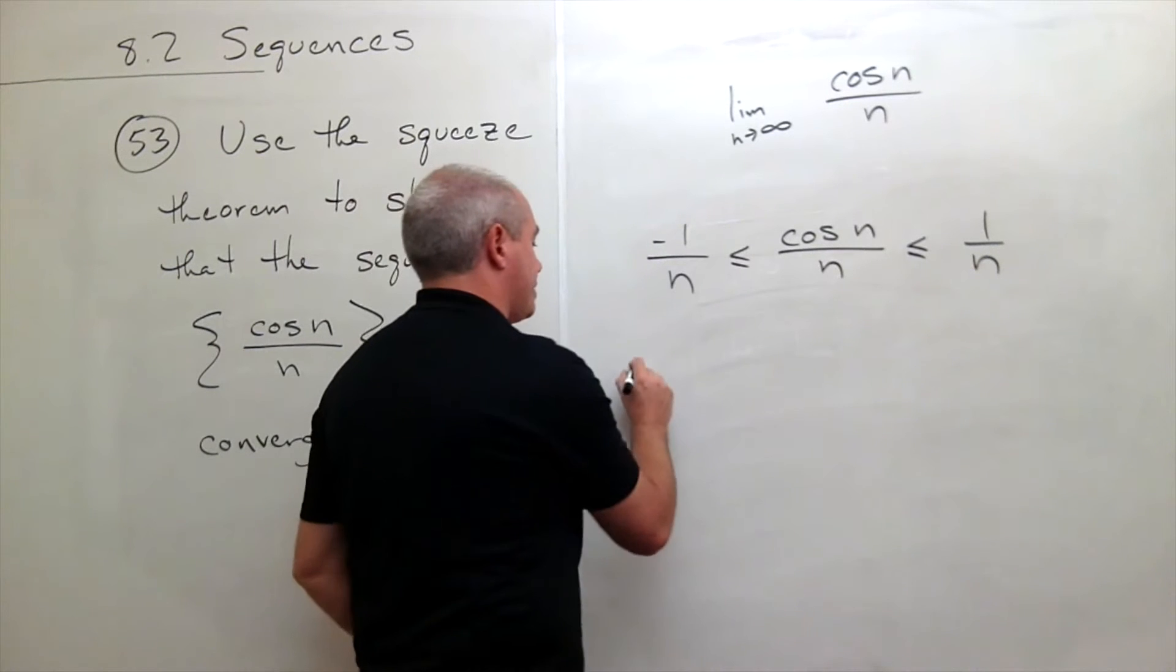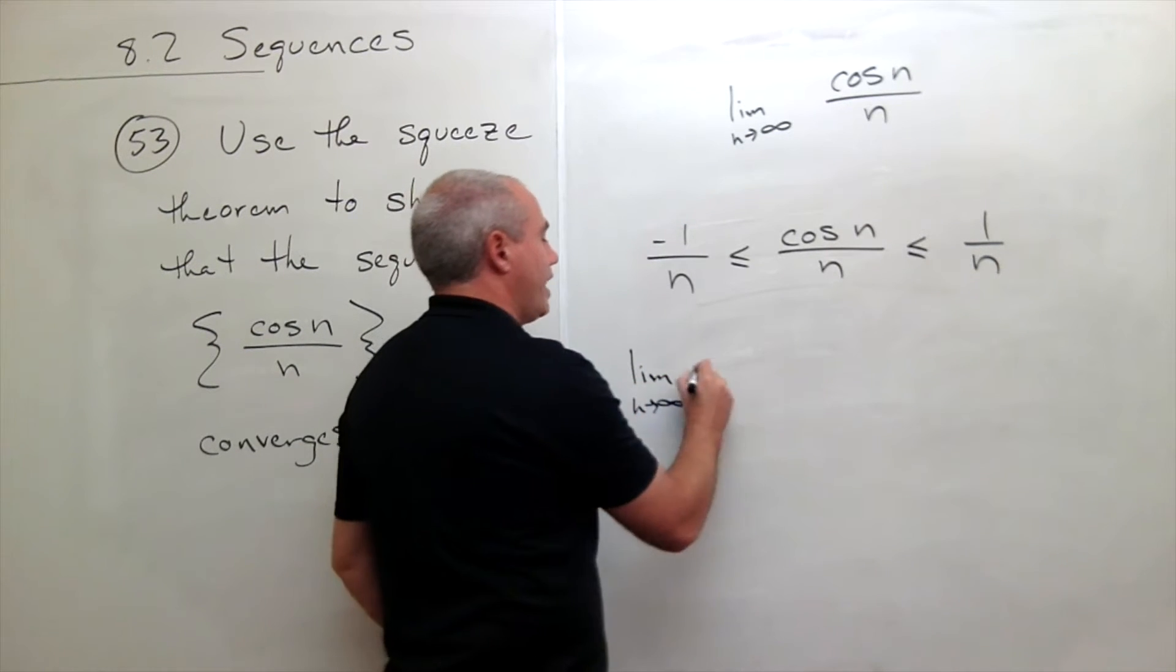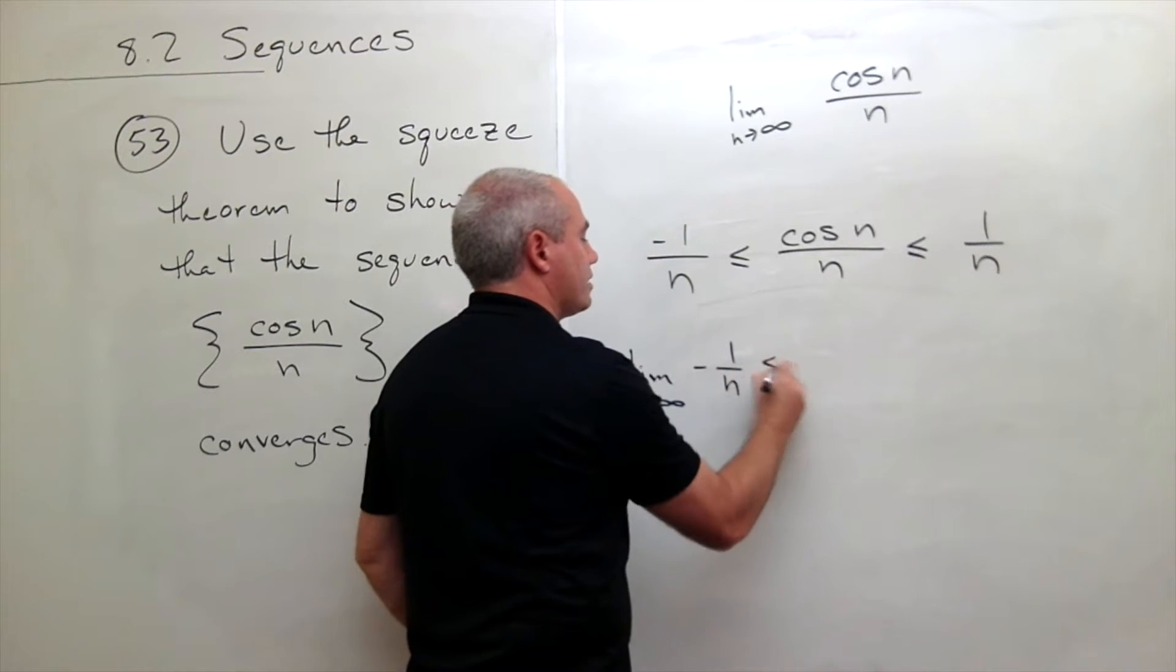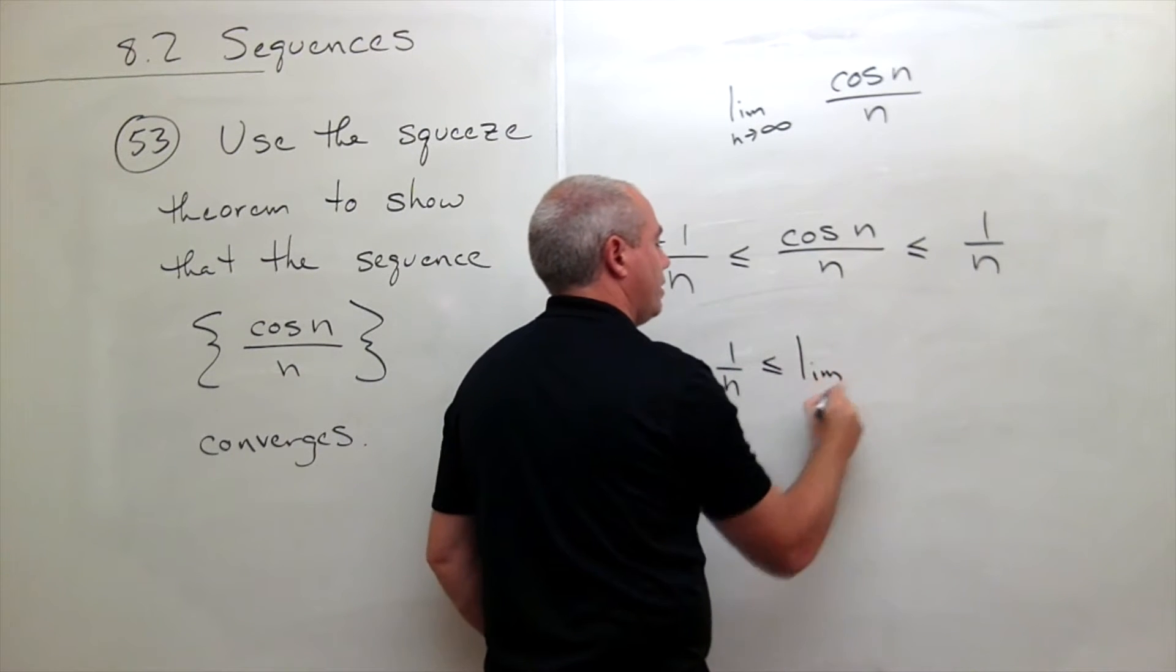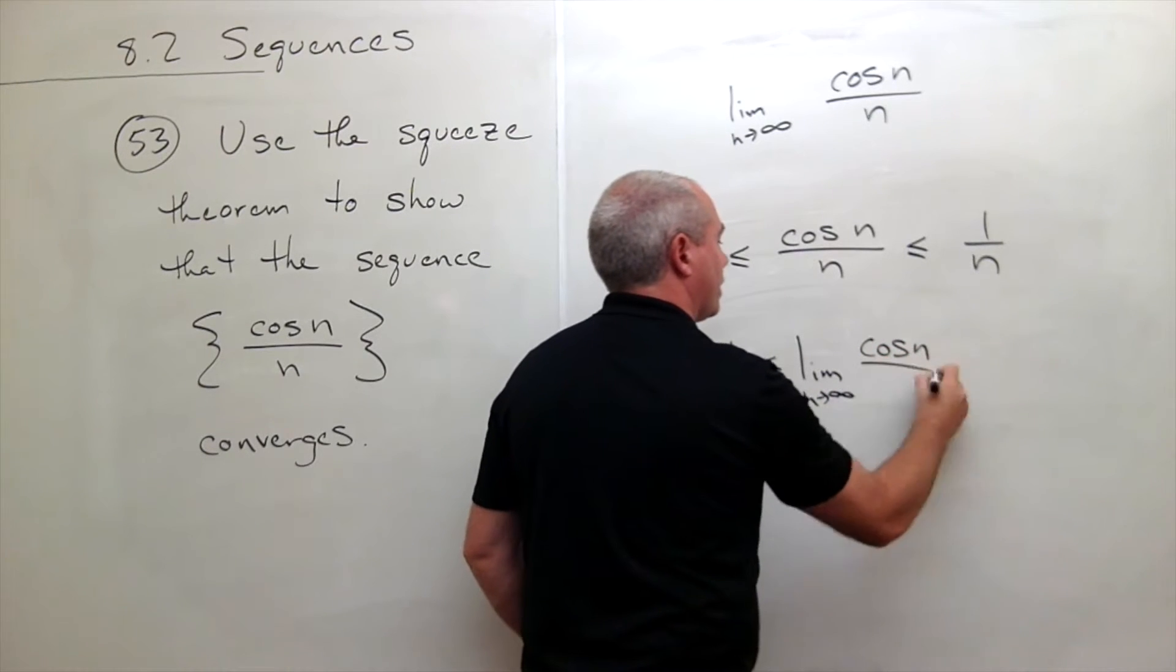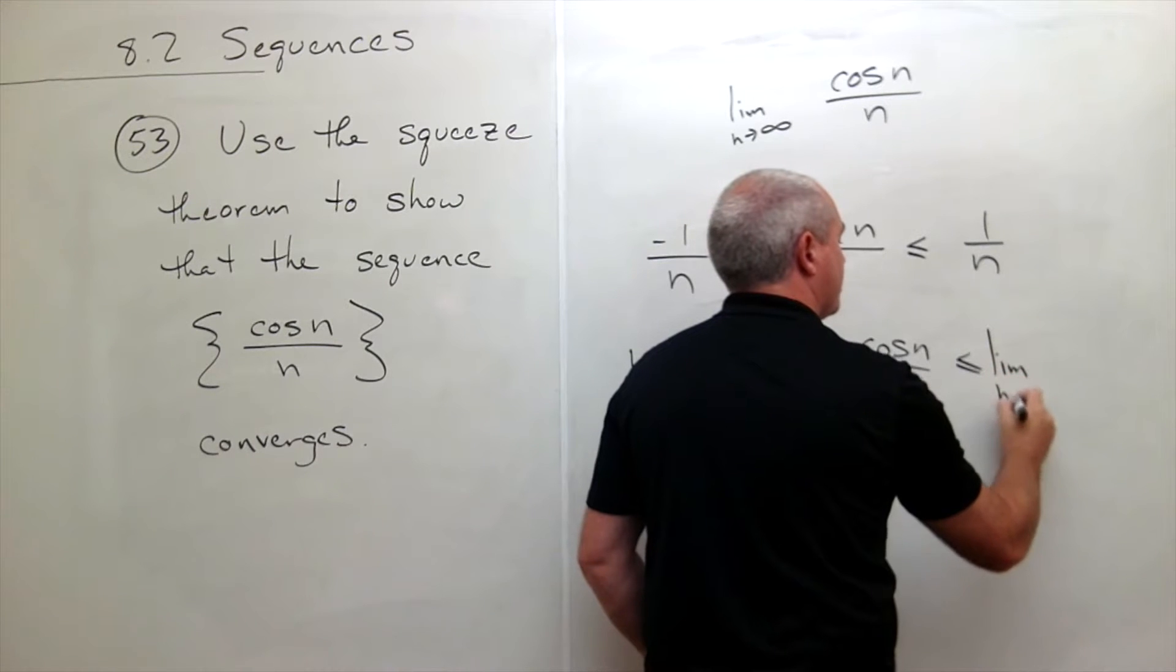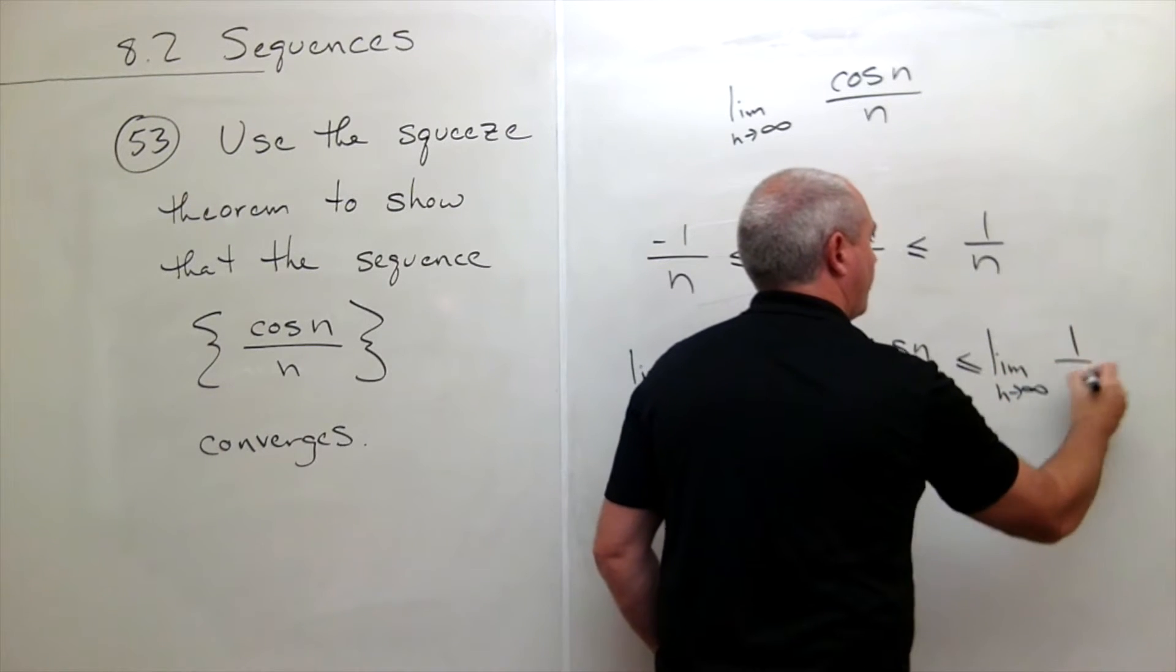So in other words, the limit as n goes to infinity of negative 1 over n is less than or equal to the limit as n goes to infinity of cosine of n over n, which is less than or equal to the limit as n goes to infinity of 1 over n.